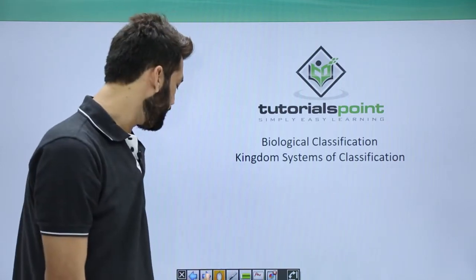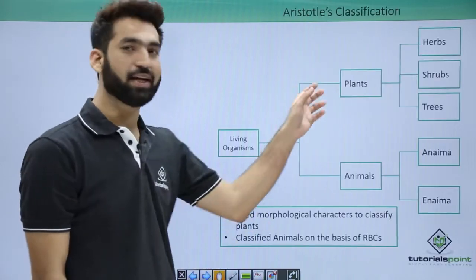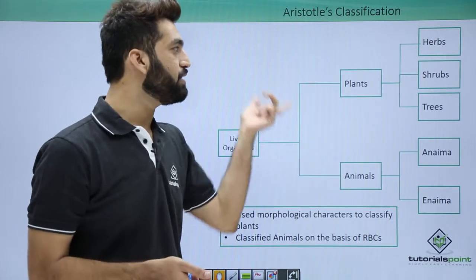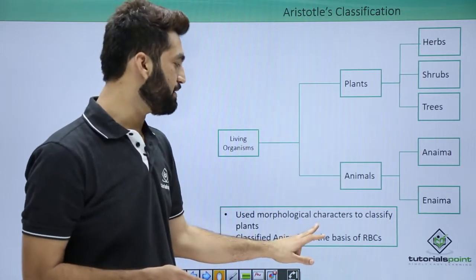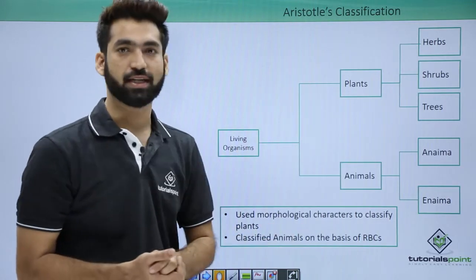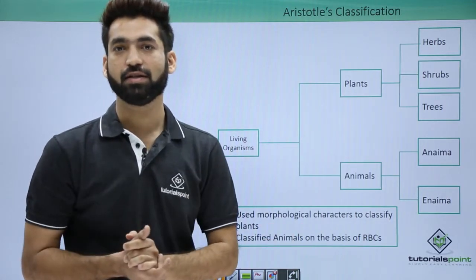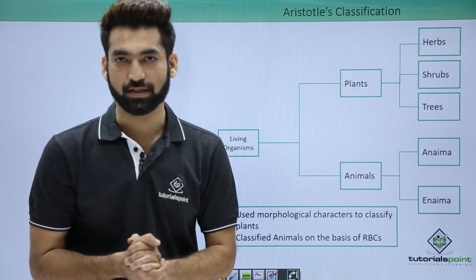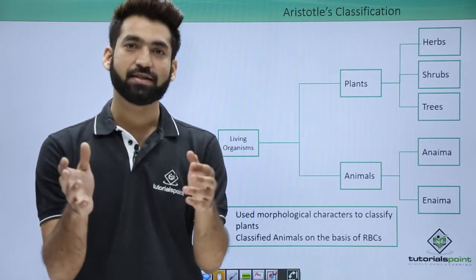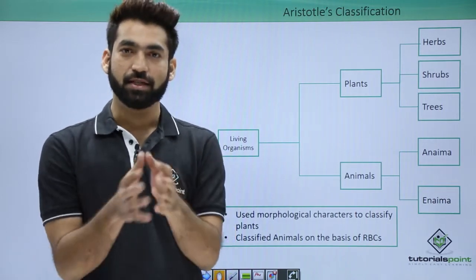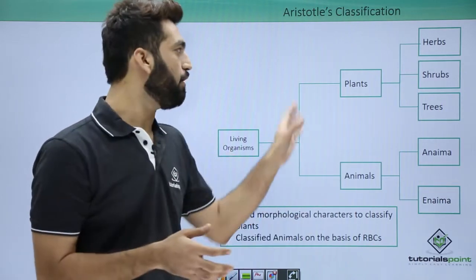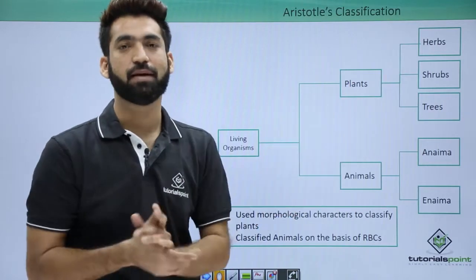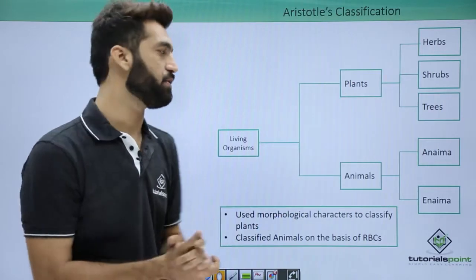We'll start with Aristotle's classification, which is basically based on morphological characters. When you talk about morphology, you are talking about external features. Aristotle looked at the external features of plants and animals and clubbed them into different groups.